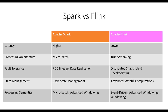In conclusion, Apache Flink emerged as the preferred choice for real-time stream processing. With its low-latency, true-streaming architecture, efficient fault tolerance, advanced state management, and versatile processing semantics, Flink provides a robust and powerful platform for handling real-time data streams.